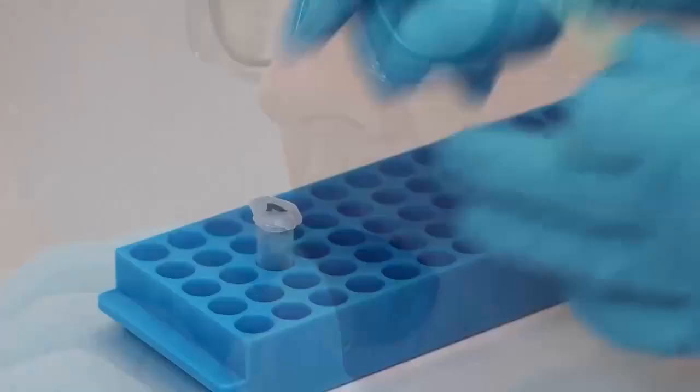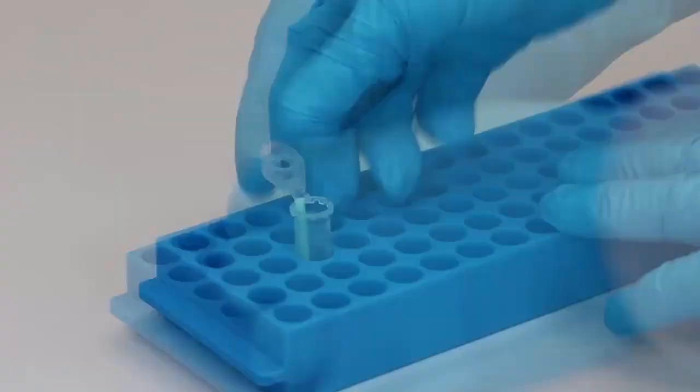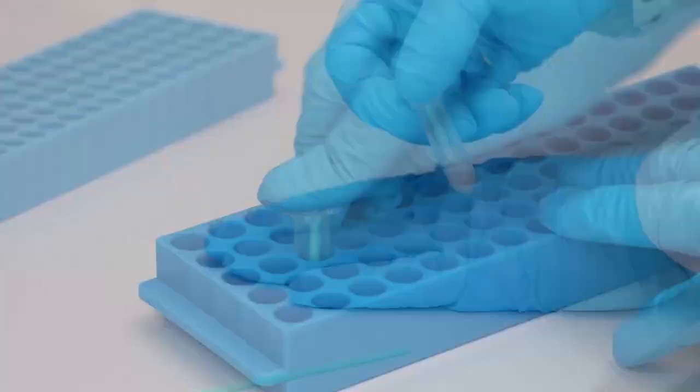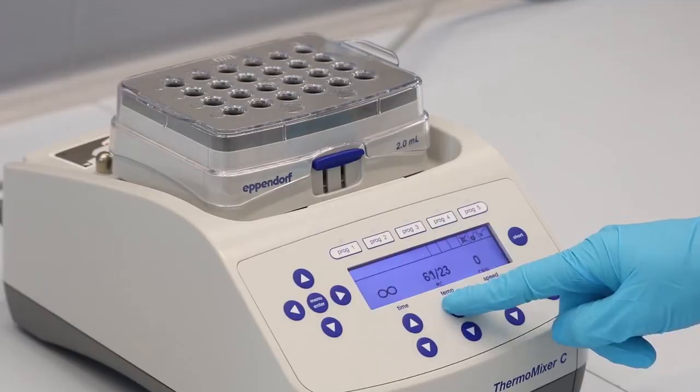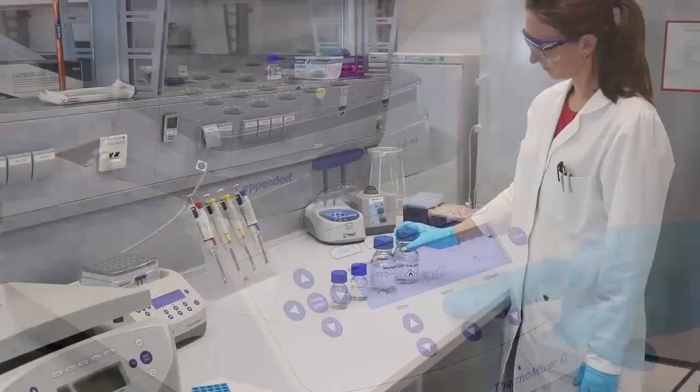Place the tip of the collection swab into the labeled sterile microcentrifuge tube and break off the length of plastic that extends beyond the edge and close the tube. Preheat a heating block to 65 degrees Celsius and prepare all required buffers and solutions.